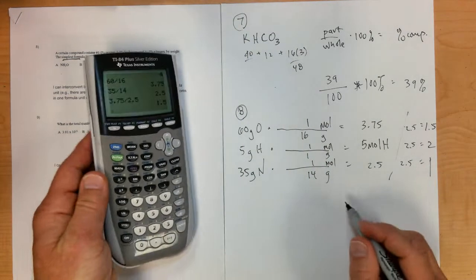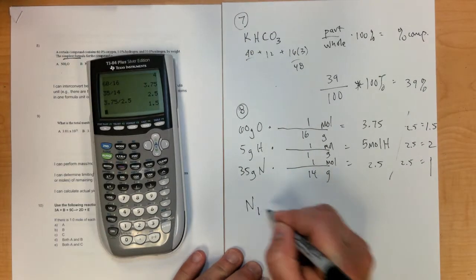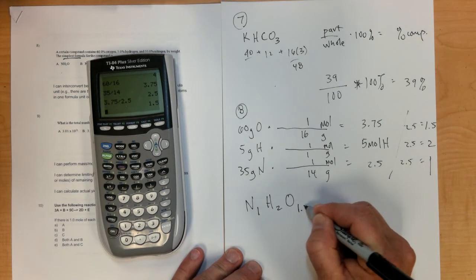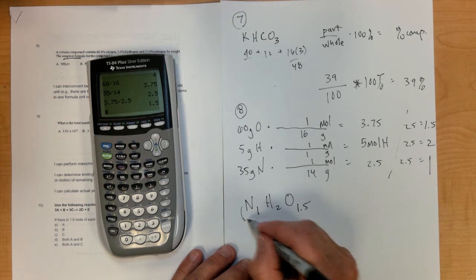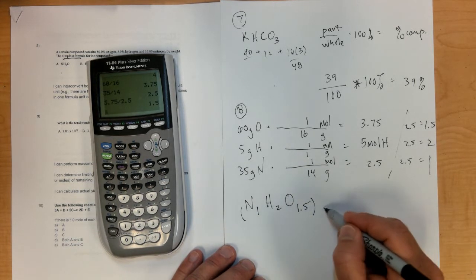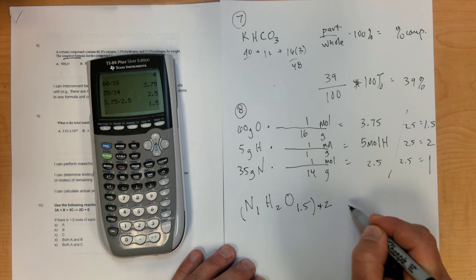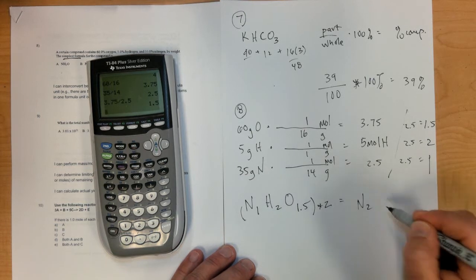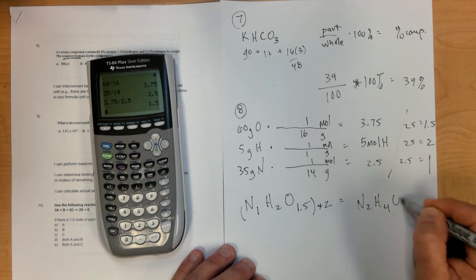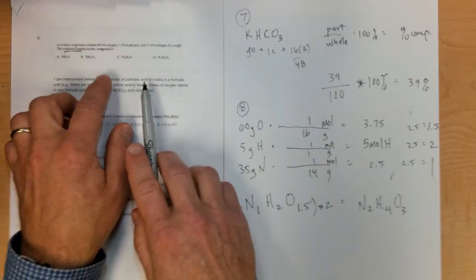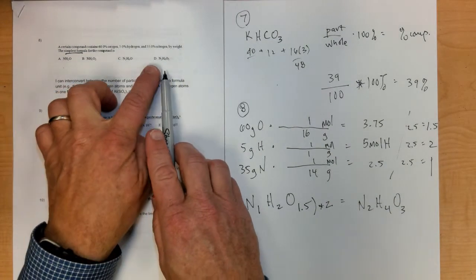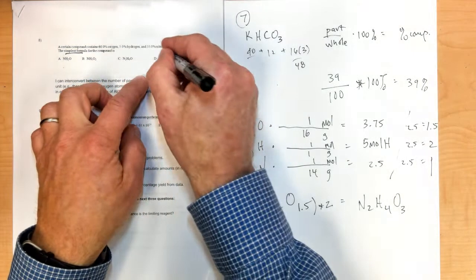Our ratio would be nitrogen 1, hydrogen 2, oxygen 1.5. Obviously, you can't have 1.5 atoms, so we multiply the whole thing by 2 to get N2H4O3. Looking at the options, N2H4O3 is letter T.